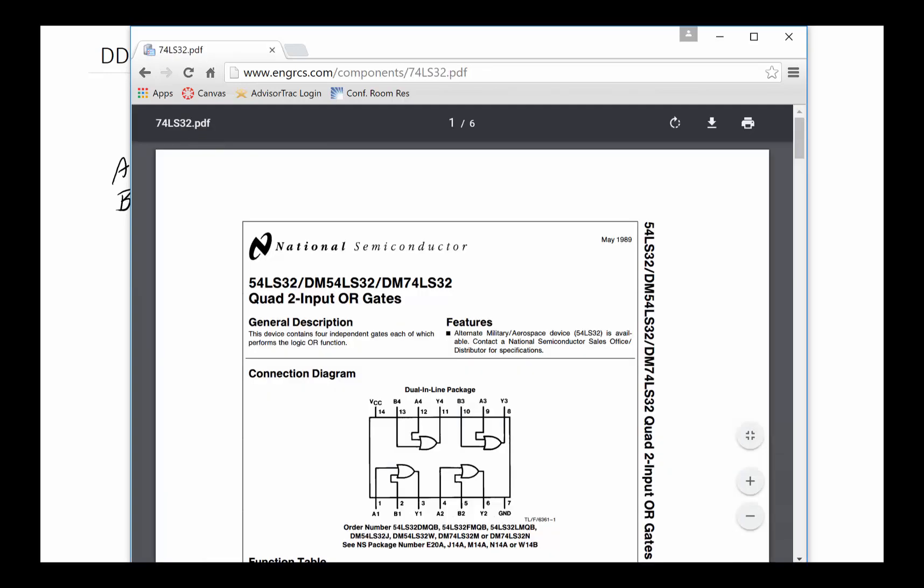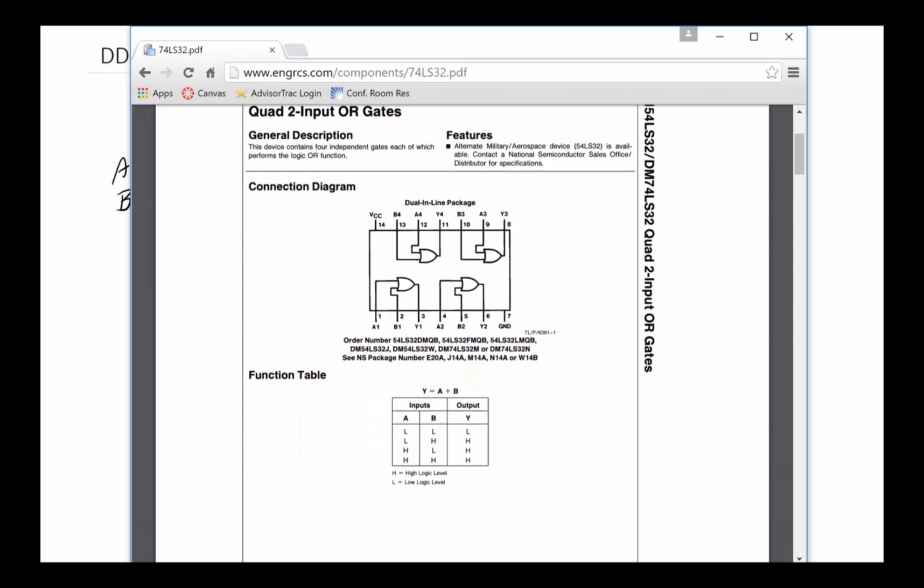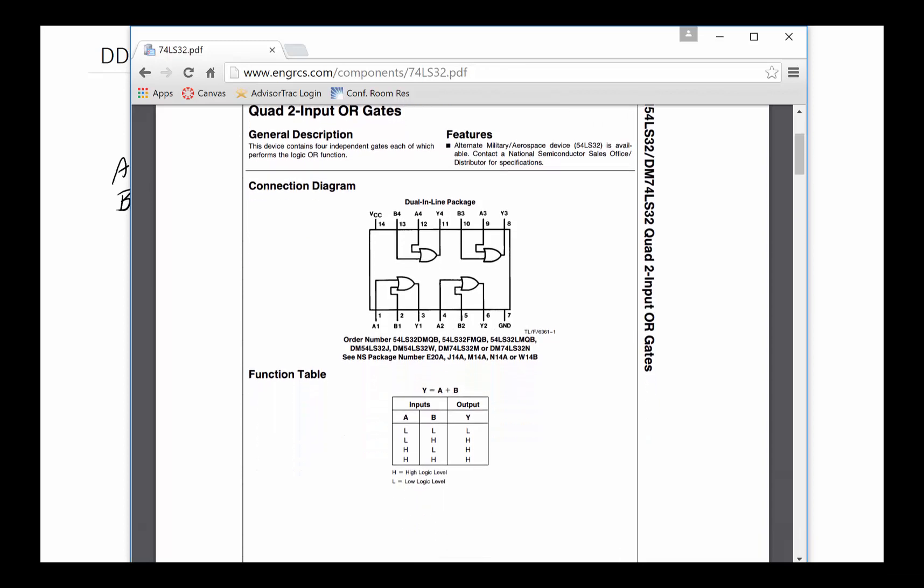Of course we have more inputs, but two input OR gate, and they come in a package that's got four of these in it. These are independent of each other. The only thing they share is, in order for this OR gate to be operational, you have to connect pin 14 to VCC and pin 7 to ground.